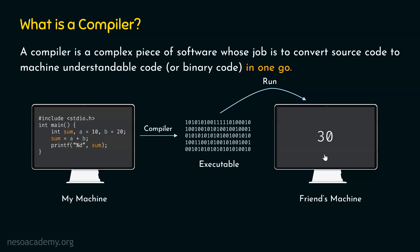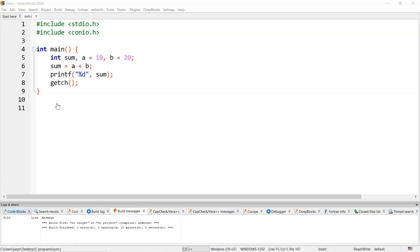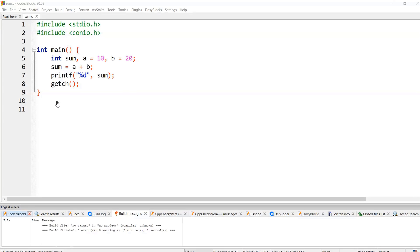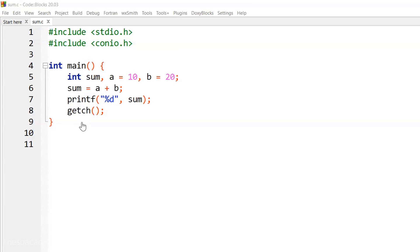My friend should have a Windows machine in order to run this code. After running the code, he will get the output 30. Now I would like to take you to the IDE, or Integrated Development Environment, where we will compile this code and see the executable. Precisely, I will take you to the Code::Blocks IDE where we will compile this C program.